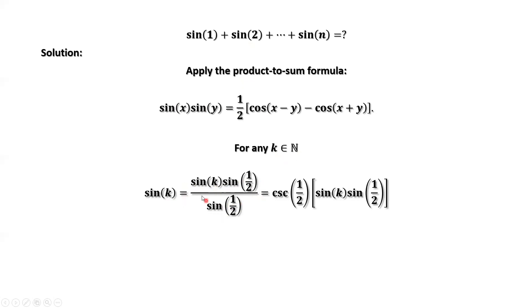One over sine of one half equals cosecant of one half. The numerator equals sine of k times sine of one half. Now we can apply this formula.